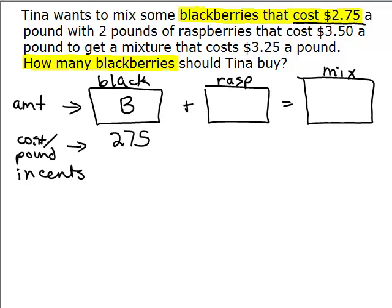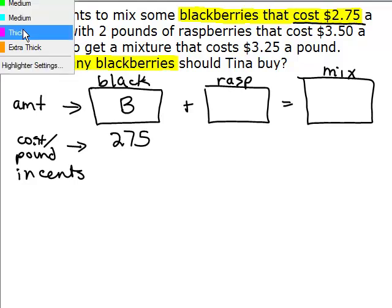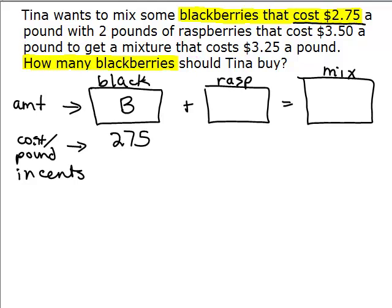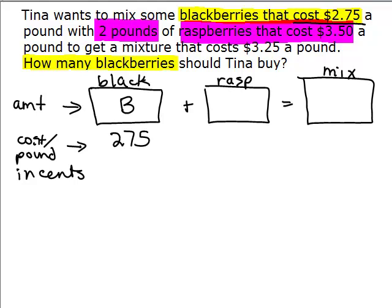Now how about the raspberries? So let's see, tells us that we've got the raspberries cost 350 a pound, and we've got 2 pounds. So 2 pounds of raspberries, it cost 350 a pound. So I've got 2 pounds and it was 350 a pound in cents.